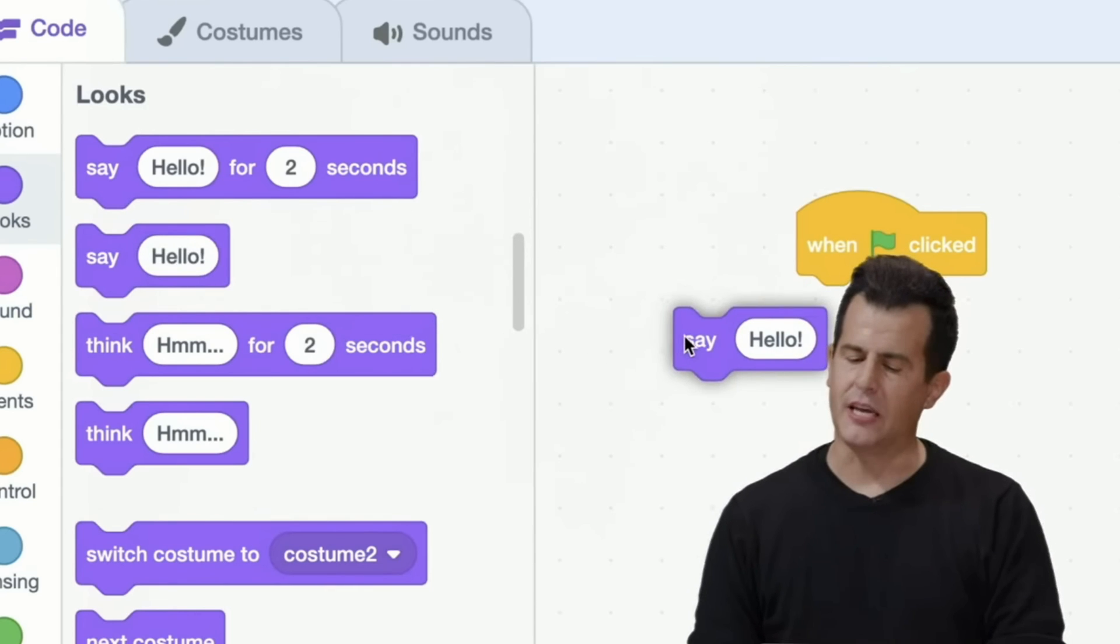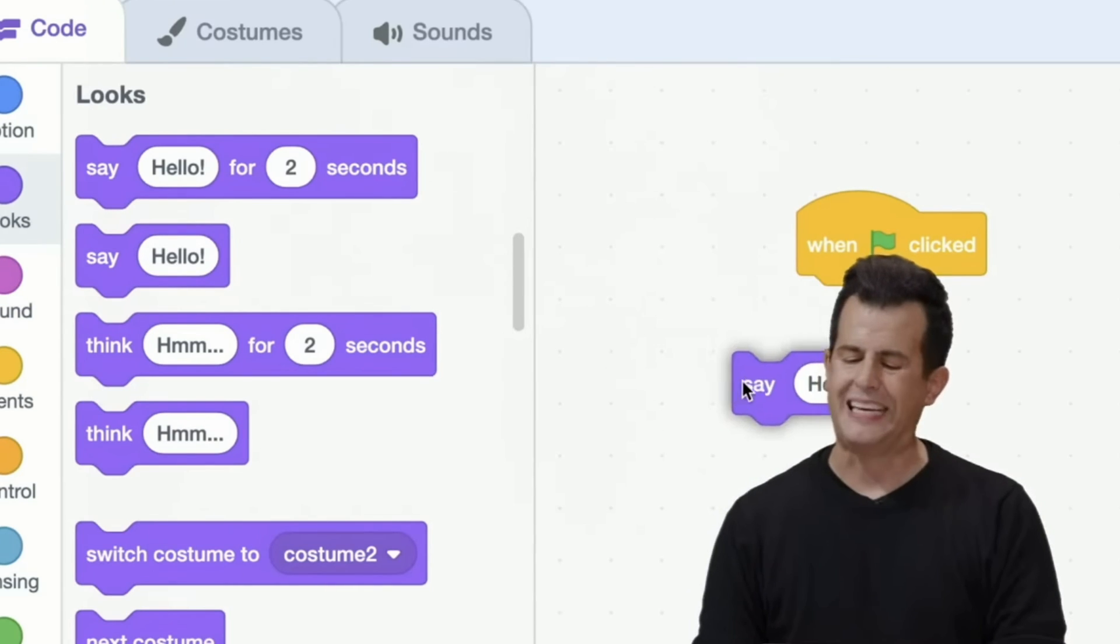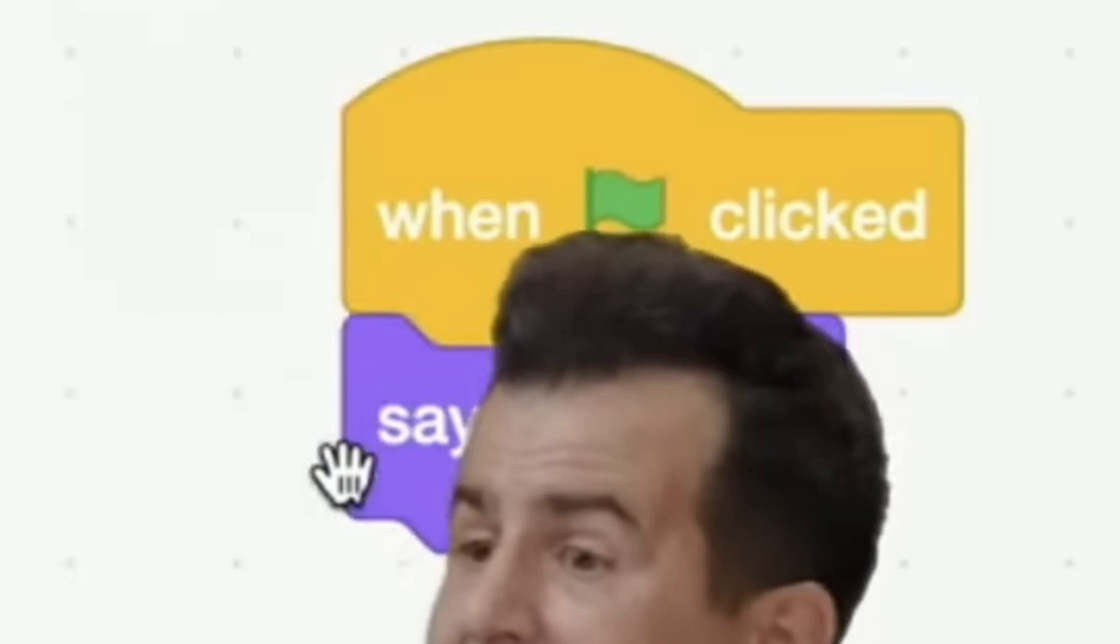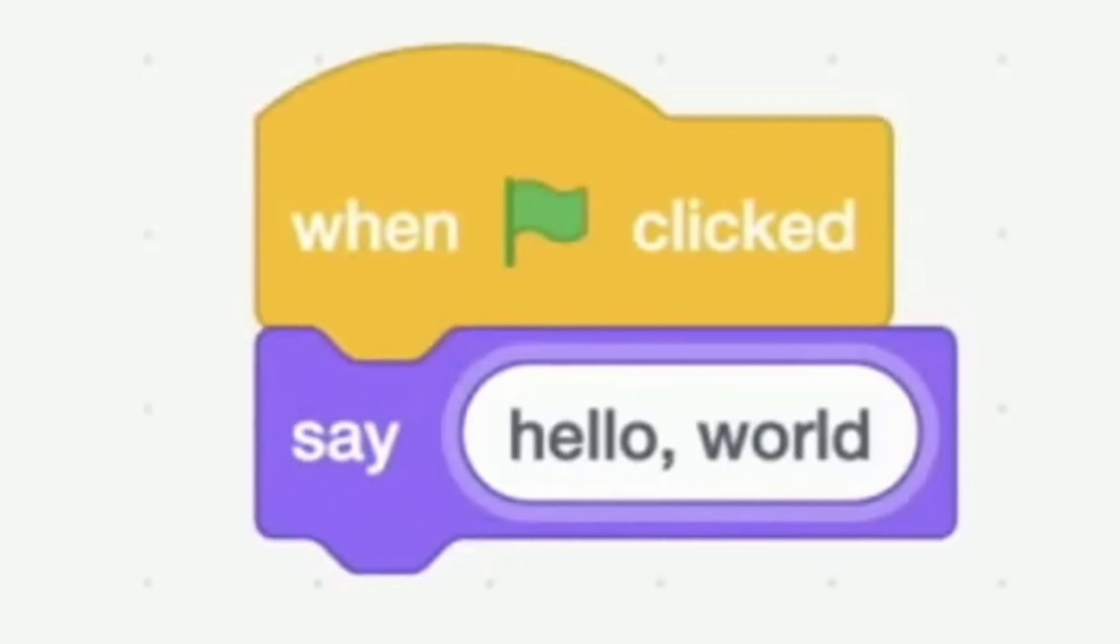Professor Malan starts by connecting a say block to a when flag clicked block, joining them together like puzzle pieces. He now has a working piece of Scratch code.